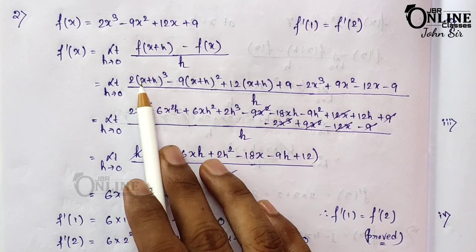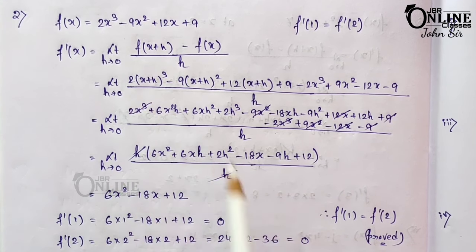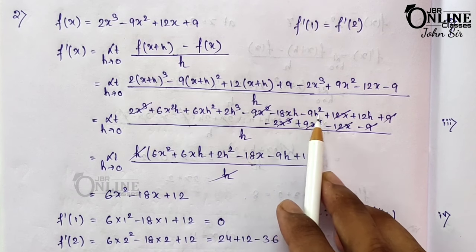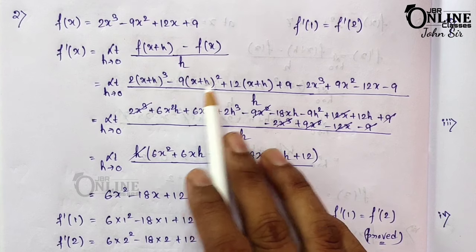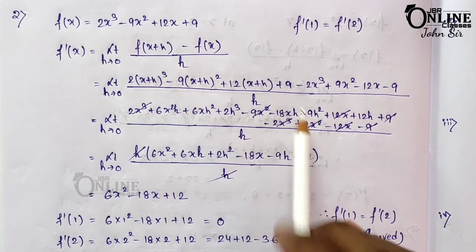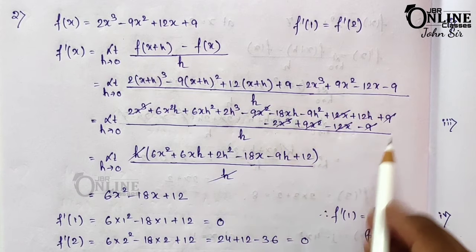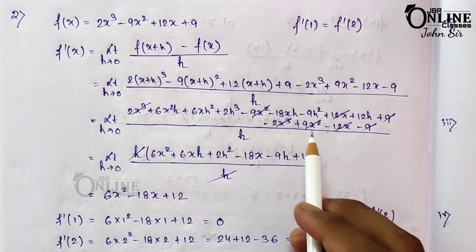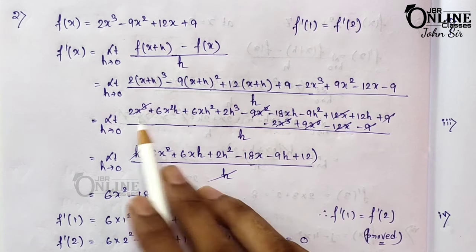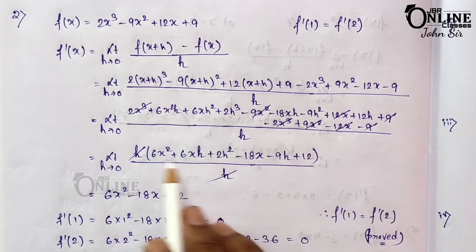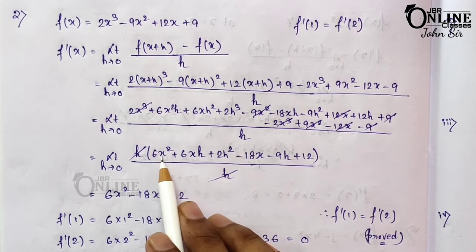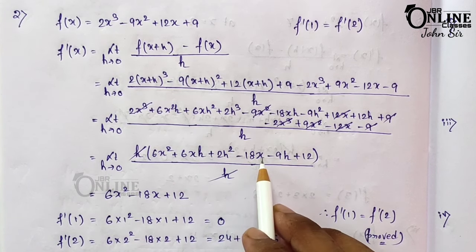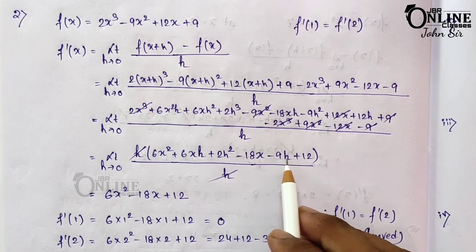Applying (a+b)³ and (a+b)² formulas: 2x³ + 6x²h + 6xh² + 2h³ for the cubic term, and -9x² + 18xh + 9h² for the square term, plus 12(x+h) + 9. After cancelling 2x³, 9x², 12x, and 9 terms, taking h as common gives: h[6x² + 6xh + 2h² - 18x - 9h + 12].